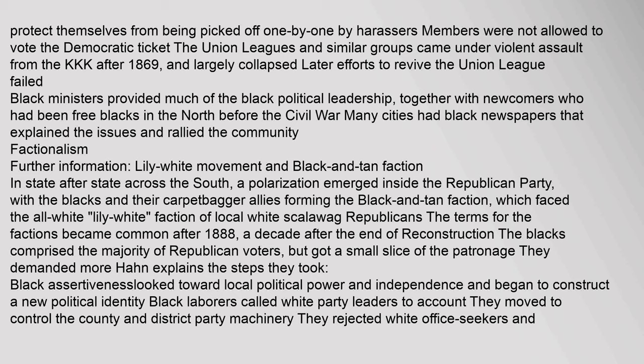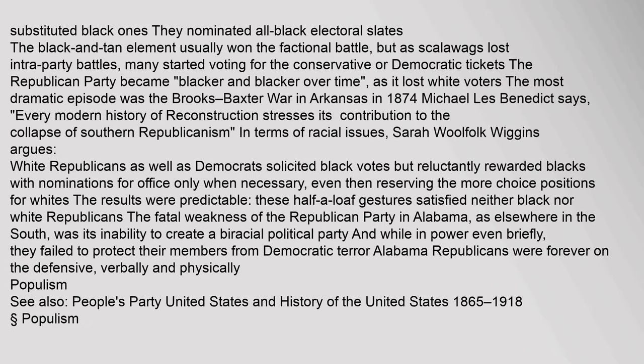In state after state across the South, a polarization emerged inside the Republican Party, with the blacks and their carpetbagger allies forming the black and tan faction, which faced the all-white lily-white faction of local white scalawag Republicans. The terms for the factions became common after 1888, a decade after the end of Reconstruction. The blacks comprised the majority of Republican voters but got a small slice of the patronage. Black assertiveness looked toward local political power and independence, constructing a new political identity.